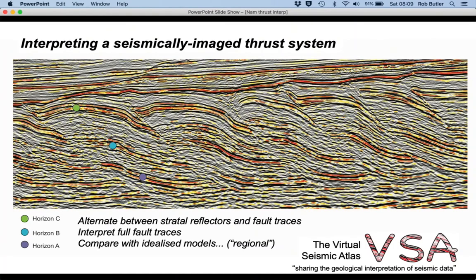We're going to alternate between picking stratal reflectors and fault traces, and then we're going to interpret the full fault traces, in other words how they link together. And to make sure we're on the right track we'll compare our interpretation with some idealized models and we'll use the regional concept.